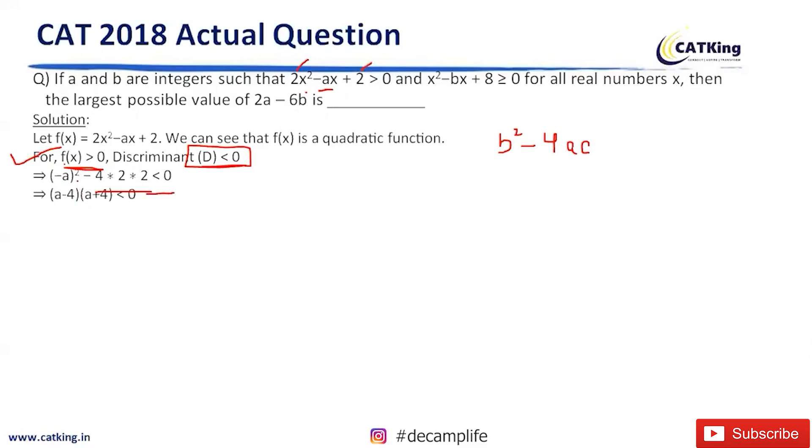So we are getting a² - 16, which is (a - 4)(a + 4) < 0. So that means whenever there is a less sign, the value belongs between these two numbers.